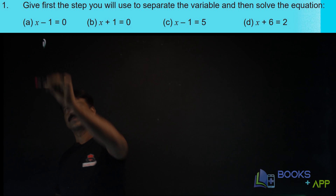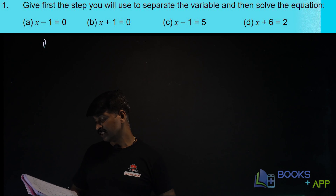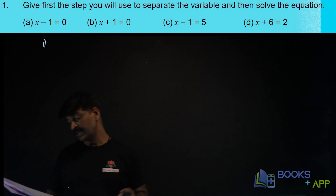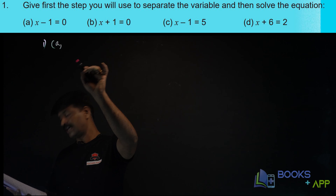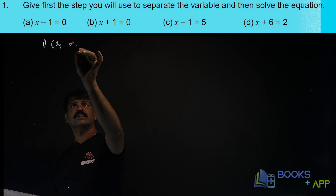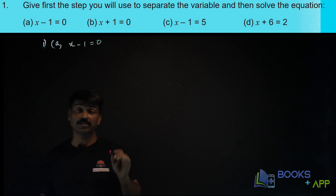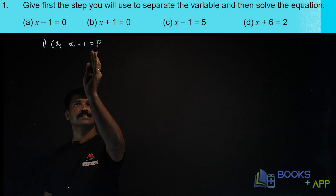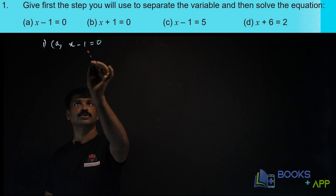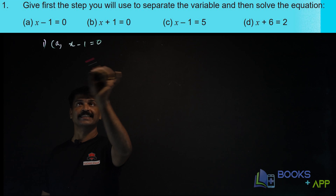First question: give the first step you will use to separate the variable and then solve the equation. The first question is x minus 1 is equal to 0. What you have to find out? You have to find the value of x. To find the value of x, you should add plus 1 on either side.